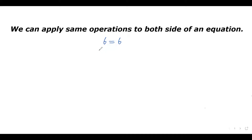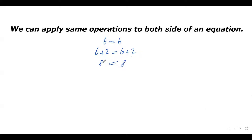So let's try it. Let's say I'm going to add 2 to the left side of this equation and then I'm adding the same thing — 2 — to the right side as well. So this equation should still be true. Let's check it. I have 6 plus 2 on the left side, which is 8, and on the right side I have 6 plus 2, which is 8. Left side equals right side, so this equation is still true.